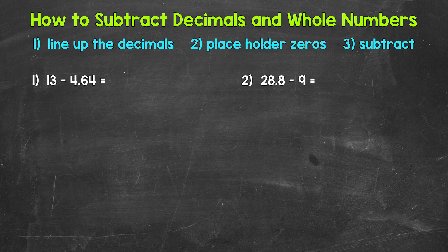Let's jump into number one, where we have 13 minus 4 and 64 hundredths. Our first step is to set this problem up by lining up the decimals. We have a whole number here, 13. Remember, the decimal point goes to the right of the ones place, to the right of the whole number, so we can put a decimal point right here for 13 to line this problem up.